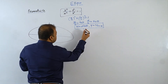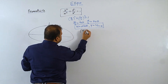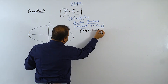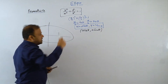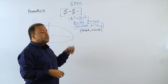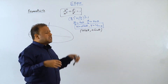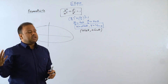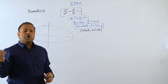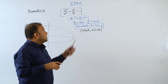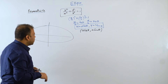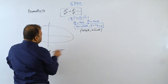So the parametric point will be (a cosθ, b sinθ), and x = a cosθ, y = b sinθ is the parametric equation of the ellipse whose center is at the origin — the standard ellipse.